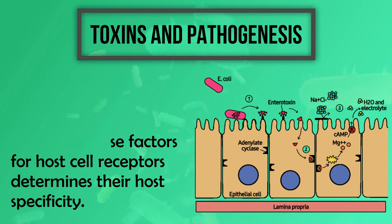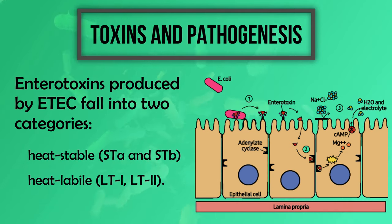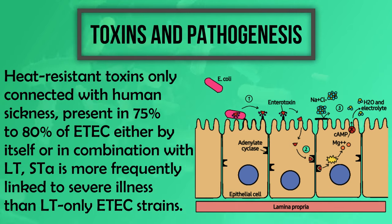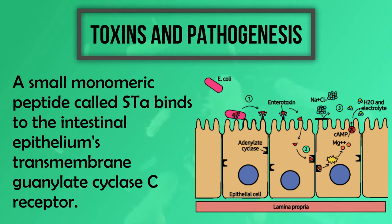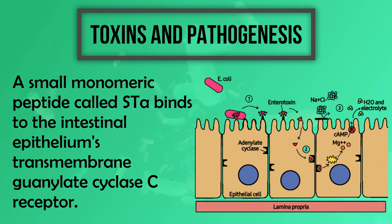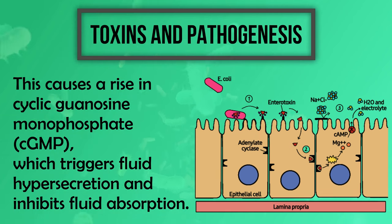Enterotoxins produced by these bacteria fall into two categories: heat-stable (STa and STb) and heat-labile (LT1, LT2). Heat-resistant toxins, associated with human sickness, are present in 75 to 80 percent of ETEC cases, either alone or in combination with heat-labile toxins. STa is more frequently linked to severe illnesses than LT-only ETEC strains. STa is a small monomeric peptide that binds to the intestinal epithelial transmembrane guanylate cyclase C receptor, causing a rise in cyclic guanosine monophosphate (cGMP), which triggers fluid hypersecretion and inhibits fluid absorption.